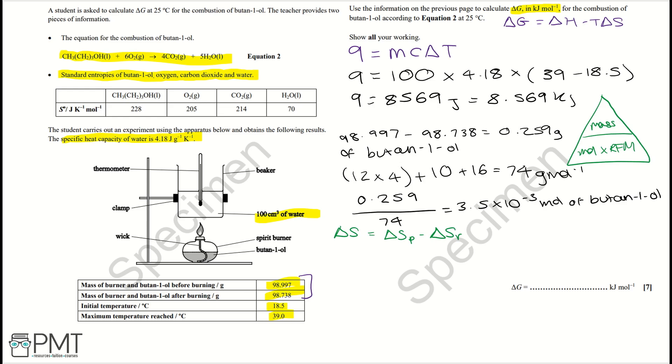So this is going to be equal, or our delta S is going to be equal to 4 times 214 plus 5 times 70 minus 228 plus 6 times 205. And that gives us a delta S value of minus 252 joules per kelvin per mole.